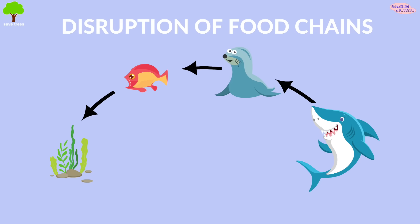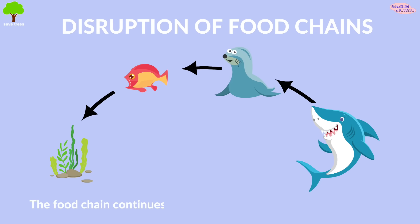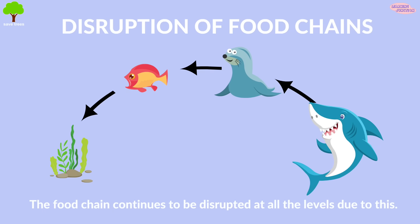Disruption of food chains. Pollutants are eaten by small animals. These animals are consumed by fish and others, and the food chain continues to be disrupted at all levels.